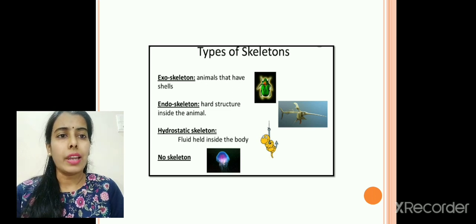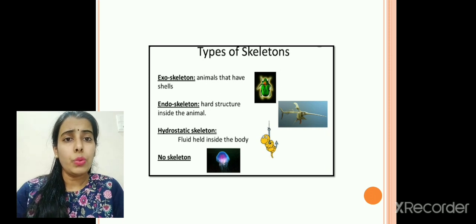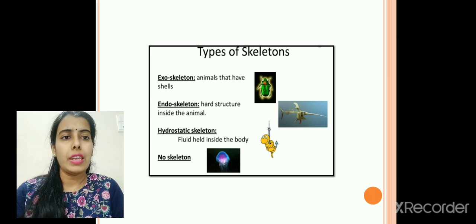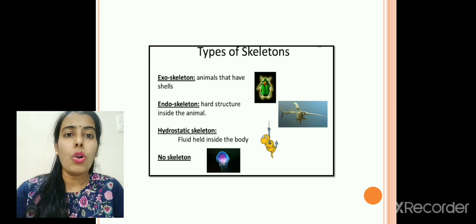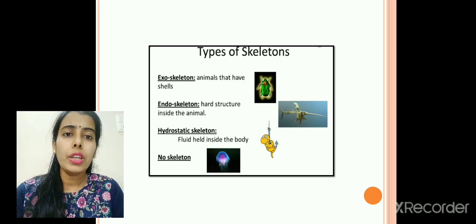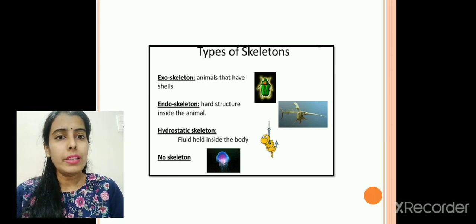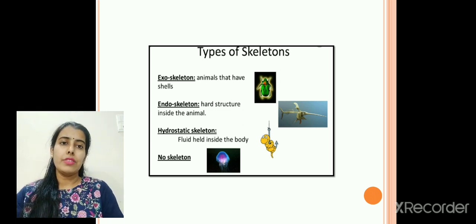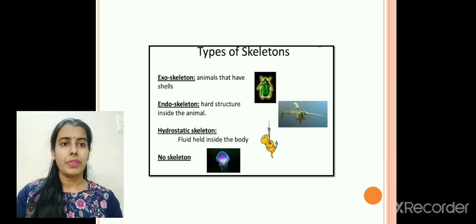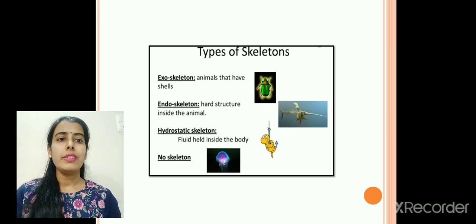The last type is hydrostatic skeleton. Such skeleton consists of a fluid which is present inside the body of the animal, like earthworm. For exoskeleton we can have examples like cockroach, crab, and snails. For endoskeleton it could be cow, buffalo, human beings, birds, etc. Hydrostatic skeleton is found in earthworms, and in jellyfish there is no skeleton.